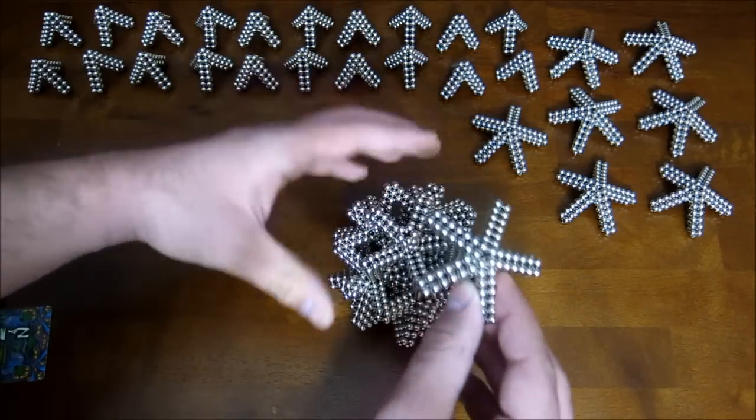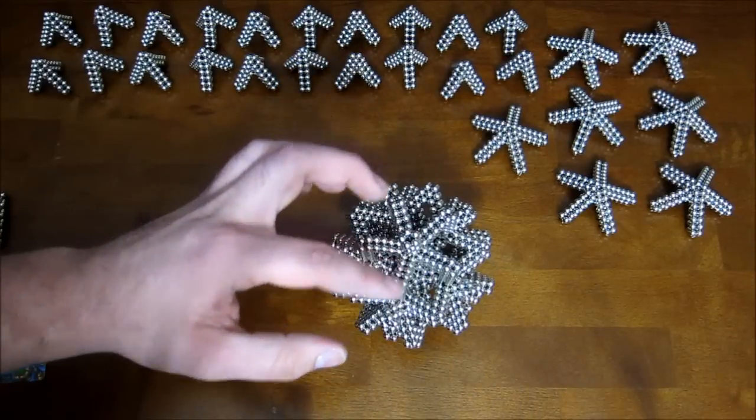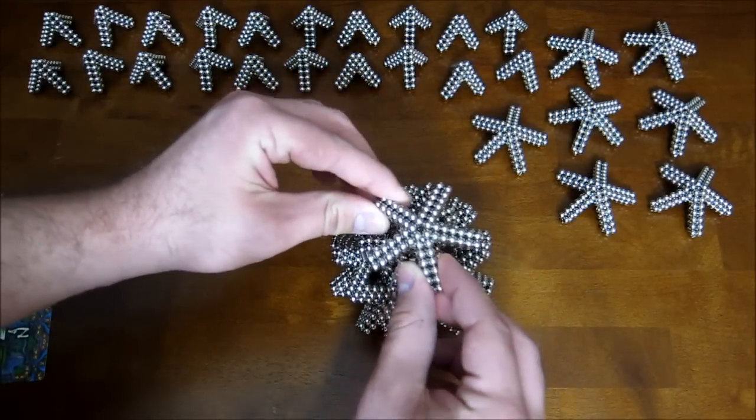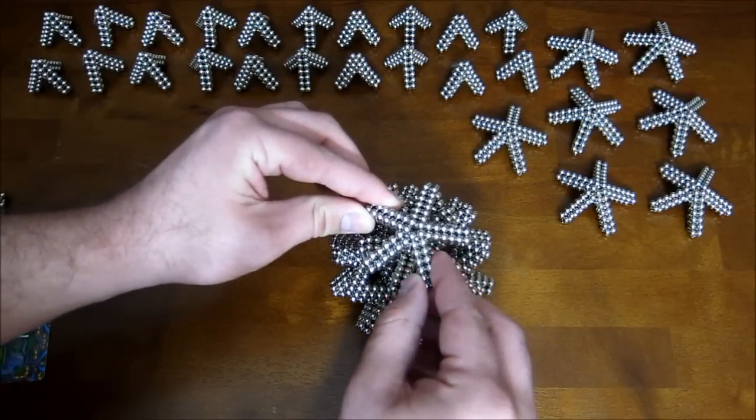And you may need to test the polarity because depending on the polarity, it may want to set down to where these edges line up with these angular pieces. Or it will want to set down where the edges go in between the angular pieces. And that's what you want.